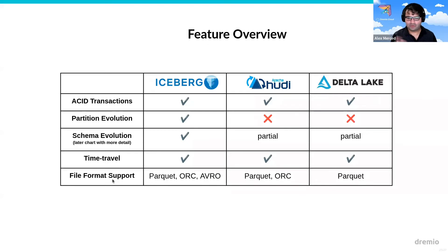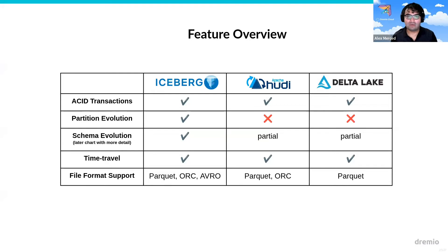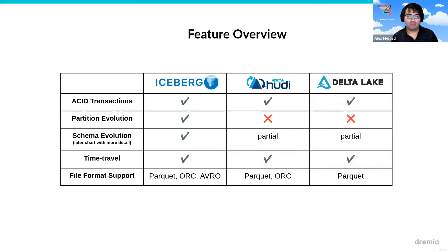So you're starting to see more parity there as these updates go. Time travel: they all have the ability to time travel. In Iceberg, you can time travel to any previous snapshot. In Hoodie, you can time travel to any commit on that timeline. In Delta Lake, you can time travel to any Delta log. For all three, if you do cleanup operations — like expiring old snapshots — you may not be able to go all the way back in time past the point where you did your cleanup. Always keep that in mind when you're thinking about how far to expire your snapshots.